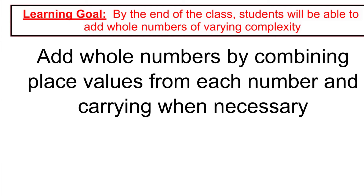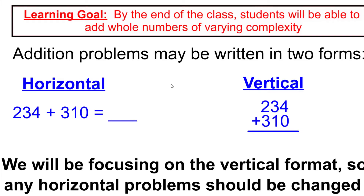We're going to take a look at a couple of problems. First, note that sometimes when you're presented with an addition problem, it could be written horizontally, like our example on the left, or it might be written vertically, like the example on the right. We talked last time about place values — the ones place in this first number is the four, and the ones place in 310 is the zero.